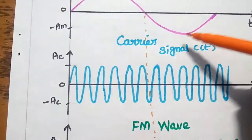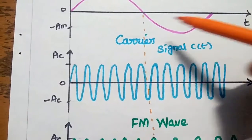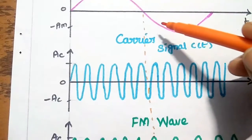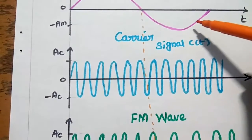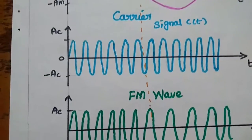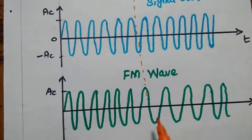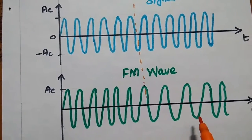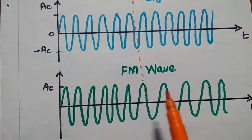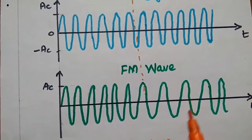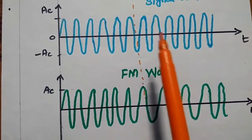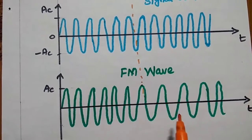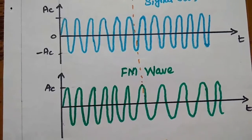During the negative half cycle, the amplitude is getting reduced. So at that time, the frequency of the FM signal or the frequency of the carrier signal is decreased.